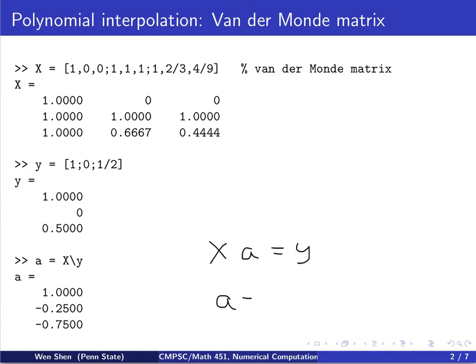So a would actually equal to x inverse, now x is a matrix, times y. To do that in MATLAB, you can simply type x, this special backslash times y. Be careful, this is not a division backslash, this is a shorthand to say it's the inverse of x times y.